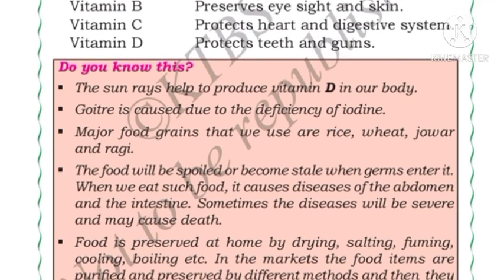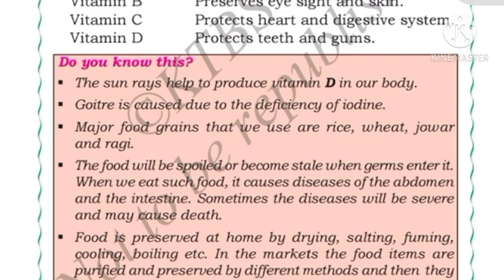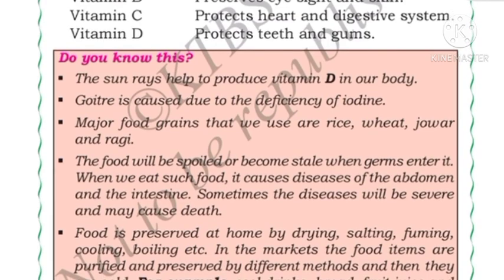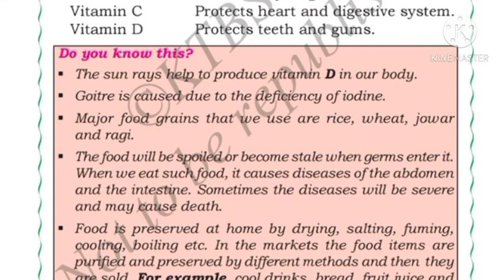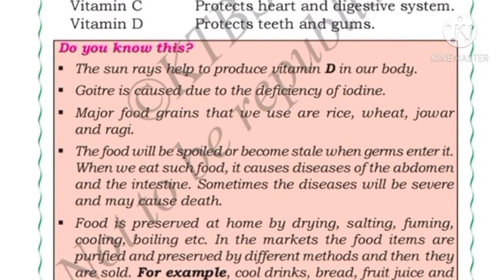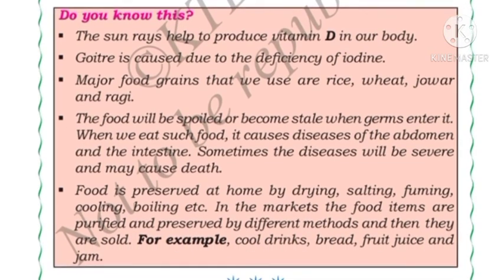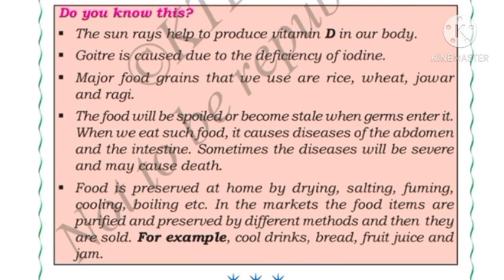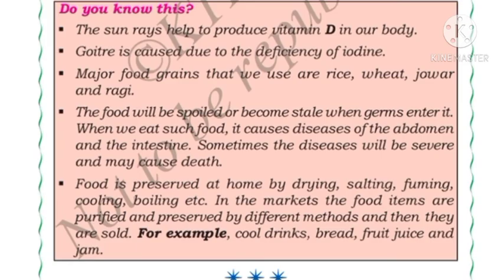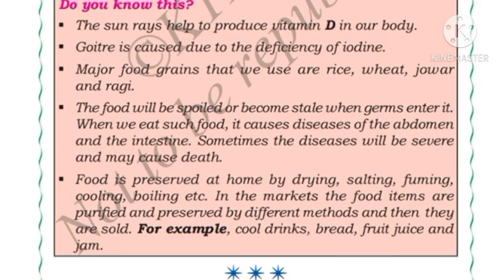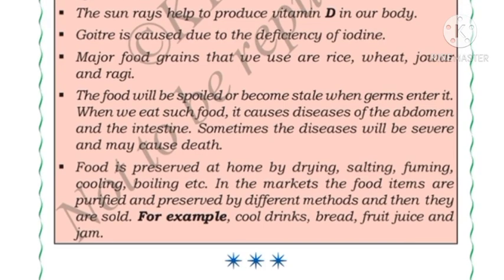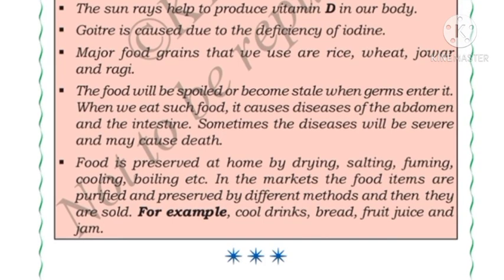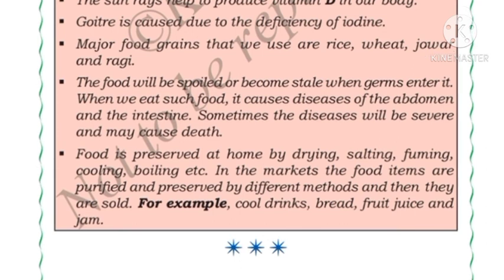Food is preserved at home by drying, salting, fuming, cooling, and boiling. In the market, food items are purified and preserved by different methods and then sold — for example, cool drinks, bread, fruit juice, and jams. This is all about Lesson 8, Food and Health. Part 1 is also linked in the description box. If you want other lessons or the next chapter, subscribe to my channel. Thanks for watching.